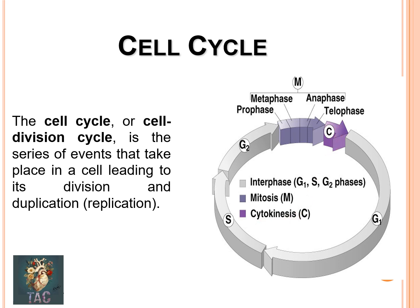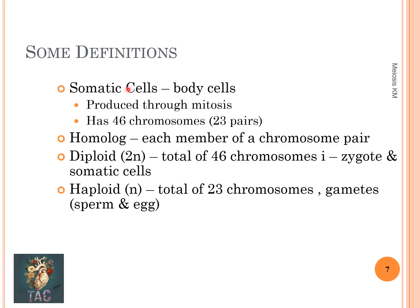Somatic cells, also called body cells, are produced through mitosis and have 46 chromosomes or 23 pairs of chromosomes. Each member of a chromosome pair is called a homolog. Diploid means a total of 46 chromosomes — the zygote and all somatic cells have 46 chromosomes. Haploid means half the number of chromosomes, that is a total of 23; the gametes, both sperm and eggs, have the haploid number of chromosomes.